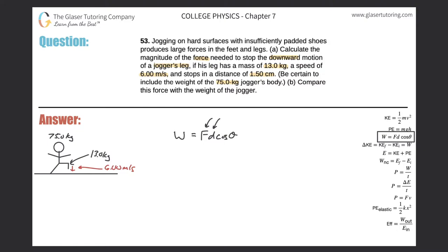Let's simply solve for F by dividing out D cosine theta from both sides, so this becomes work over the distance times the cosine of the angle. Work, remember, is just in joules — it's basically an energy. So what energy is apparent in this problem? It looks like kinetic energy.